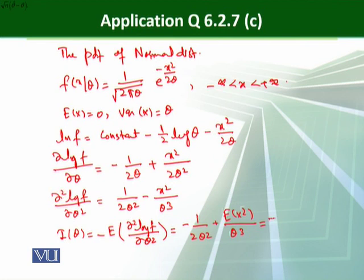so that is 1 over 2 theta square plus theta over theta raised to power 3. And when we evaluate it, that is 1 over 2 theta square, so that is basically the Fisher information.